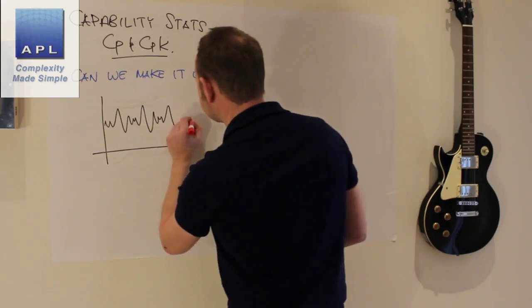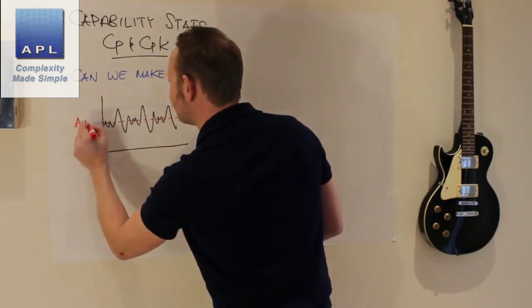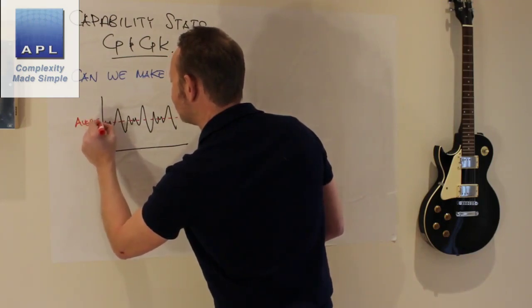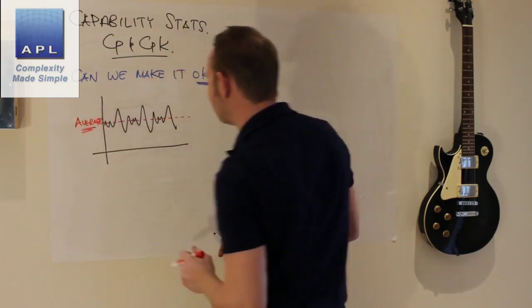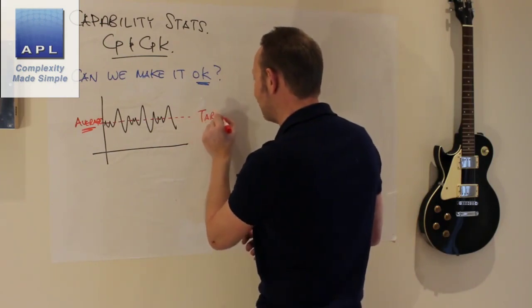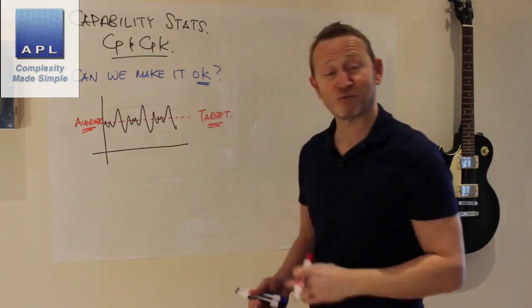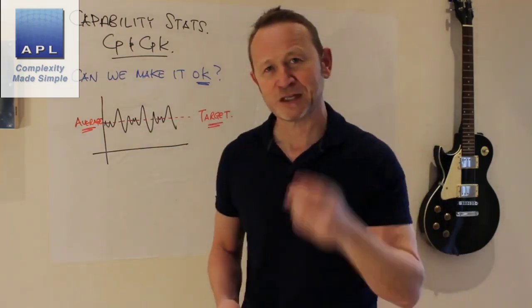And then once you've got that data, you're trying to evaluate two things. The process is essentially a random number generator. We work out the average of our data set, the process aim. One of the questions we've got to answer is: does the average hit the target or get somewhere close enough that we're happy?